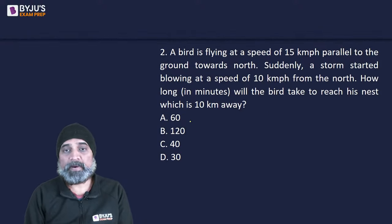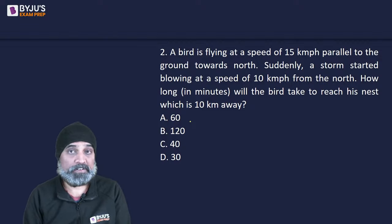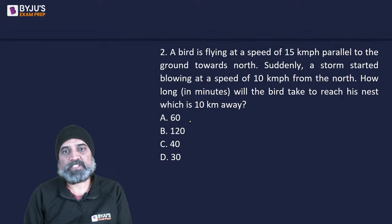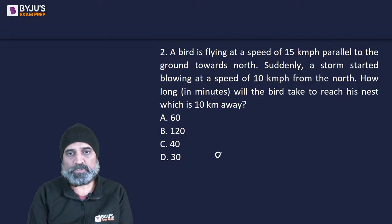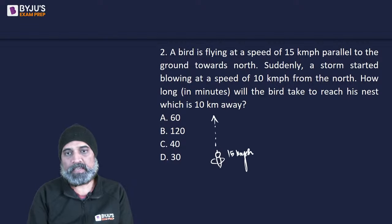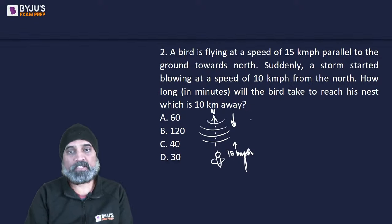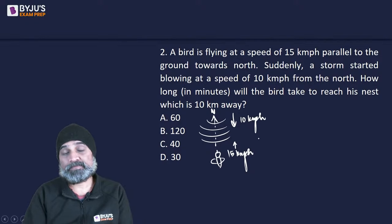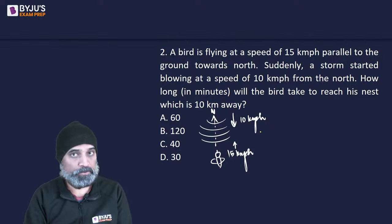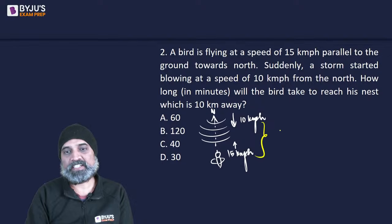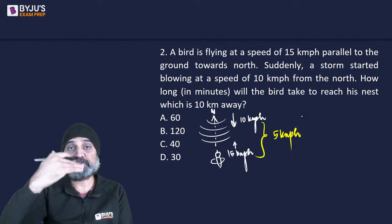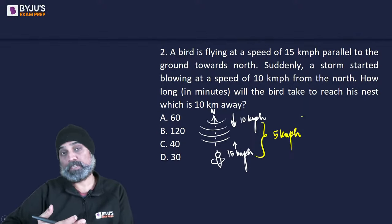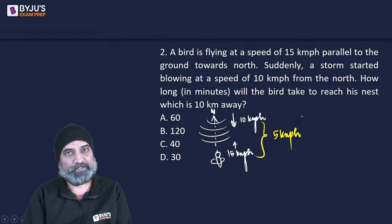Next question: a bird is flying at a speed of 15 km/h towards the north. Suddenly a storm starts blowing at 10 km/h from the north. How long will the bird take to reach its nest 10 km away? Since the wind is blowing in the opposite direction, the bird experiences drag. Its effective speed becomes only 5 km/h, because 10 of the 15 km/h is cancelled by the wind.